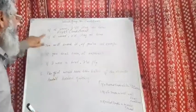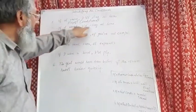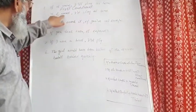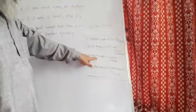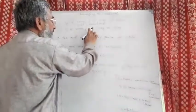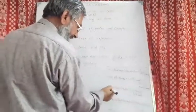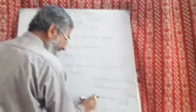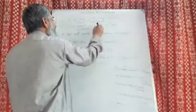Second sentence: if it rained, I would stay at home. If it rained — rained is past simple, second form — and in the other part we have would: I would stay. So naturally it is the second conditional.